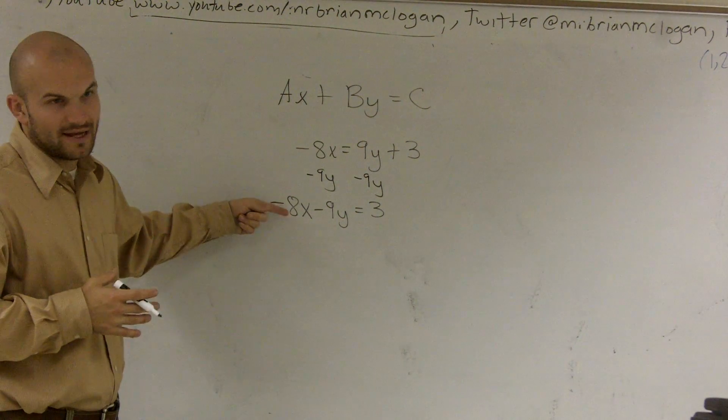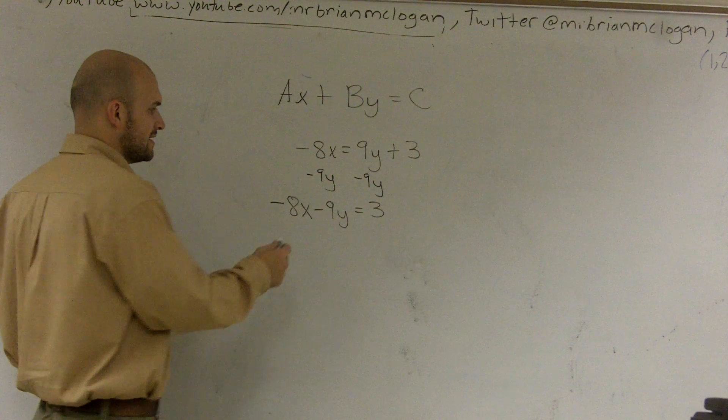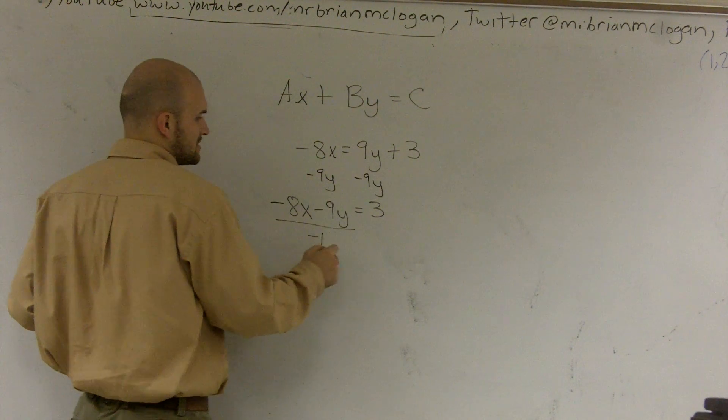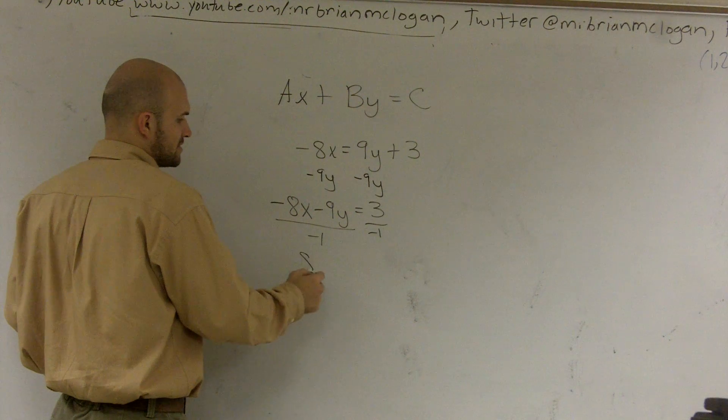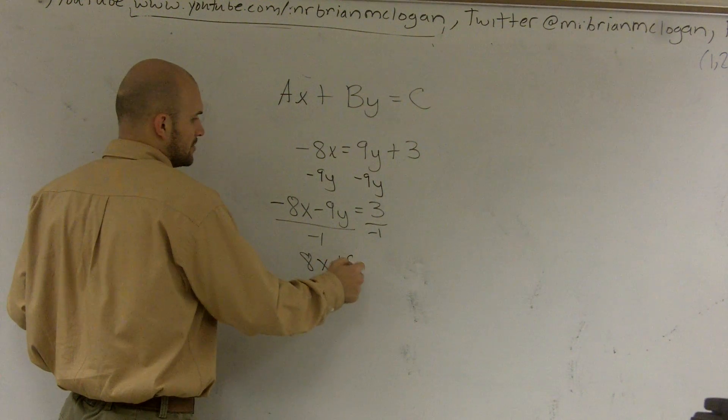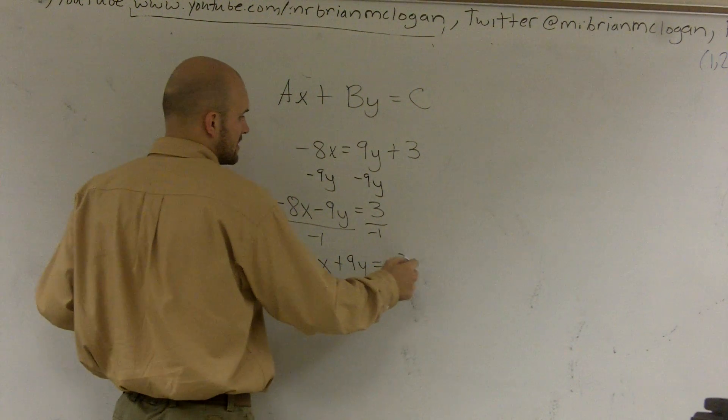So what we need to do, I have a negative 8. I need to get rid of that negative. To get rid of it, I just need to divide both sides by negative 1. Therefore, this will make it positive. So I'll get a positive 8x plus 9y equals negative 3.